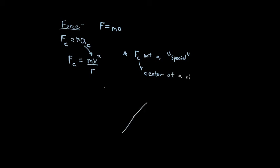All the forces we've already studied — gravity, tension — can be centripetal in nature. For example, consider a car driving over a hill shaped like a perfect circle. Gravity pulls the car down, keeping it on the hill. Since gravity acts towards the center of that circular arc, gravity itself is acting as a centripetal force in this scenario.